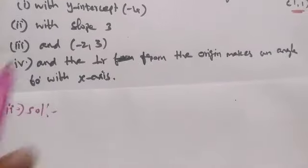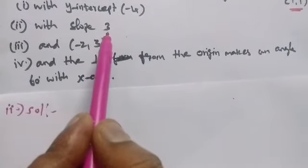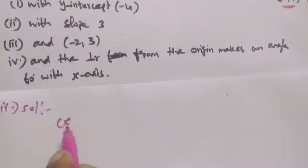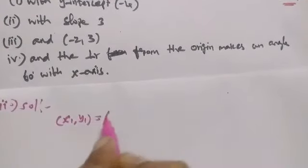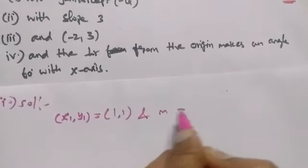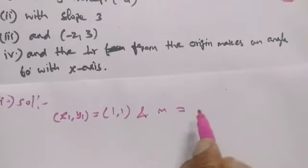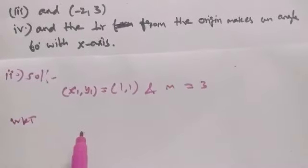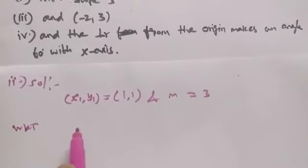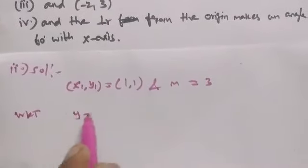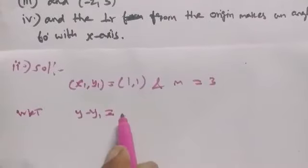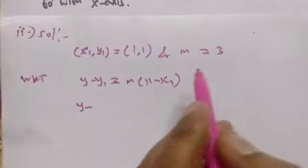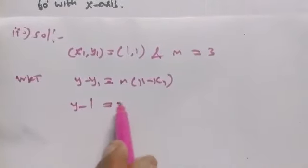Part 2: Given point x1, y1 equal to (1,1) and m equal to 3. We know that by point-slope form, the equation of the straight line is y minus y1 equal to m into (x minus x1). So y minus 1 equal to 3 into (x minus 1).